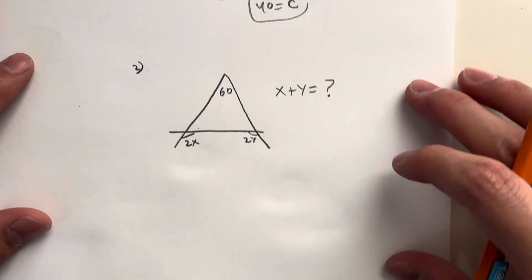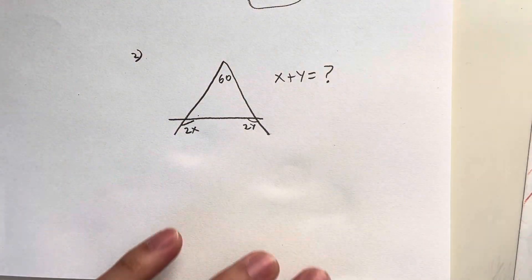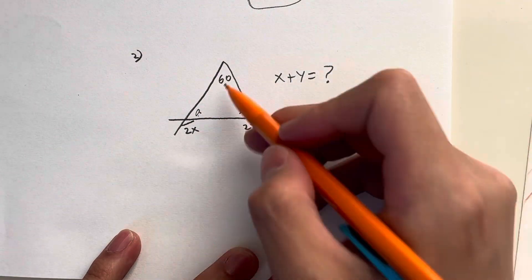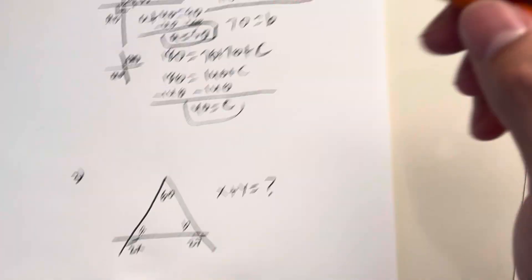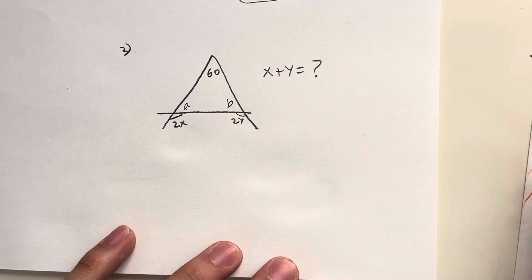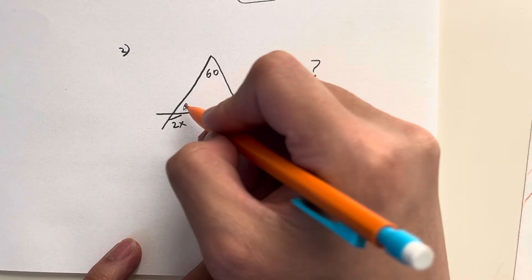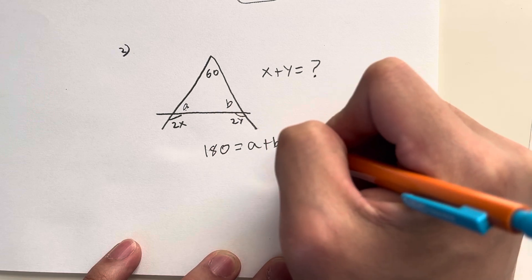Now what about this question right here to get the value of x plus y? Now I'm just going to call this angle A and angle B. Label these two. As I mentioned previously in question number one, what do all triangles sum up to? All triangles should sum up to 180 degrees. So 180 is going to be equal to A plus B plus 60.